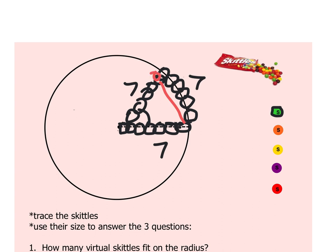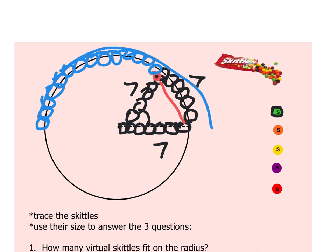Now, I'm not going to torture you with making all of them, but if you made all of them all the way around here, seven times three would be 21, but it doesn't end up being 21. It ends up taking 22 Skittles this way. And then you end up with this magical number 22 sevenths. Does everybody know what that is? Does it have to do with pi? It is pi.